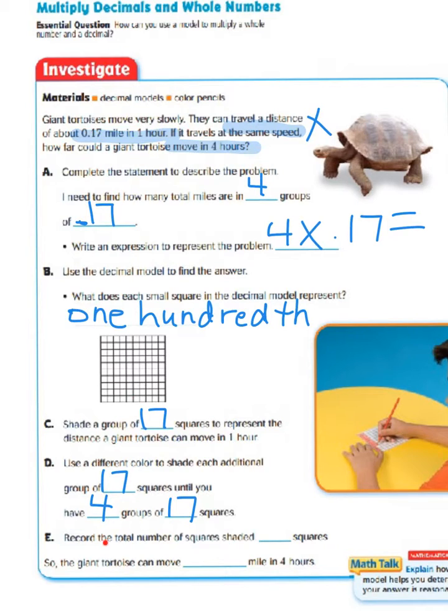So, we are going to record the total number of squares shaded. So, let's go back over and finish up with our 68 shaded squares. So, the giant tortoise can move, and remember we're talking about 100ths, so the giant tortoise can move 68 hundredths mile in 4 hours.